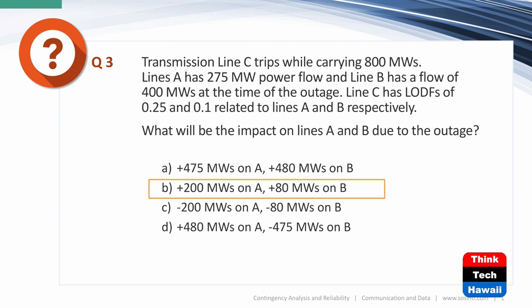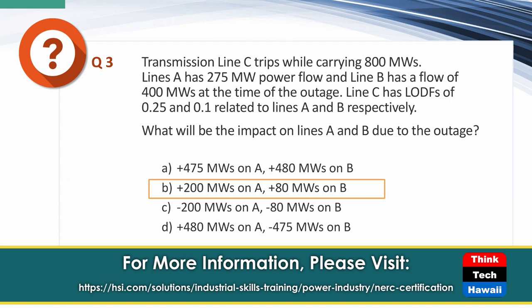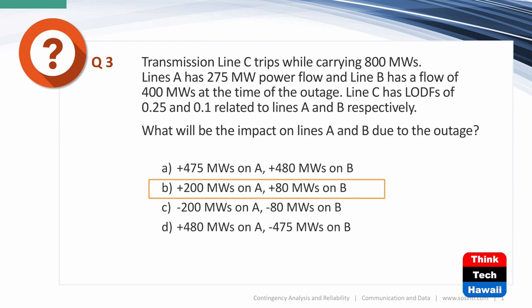Let's start on the first set of slides. Here's an example: Transmission line C trips while carrying 800 megawatts. Line A has 275 MW of power flow, line B has a flow of 400 MW at the time of the outage. Line C has a Line Outage Distribution Factor of 0.25 for line A and 0.1 for line B. The answer is 200 MW on A and 80 MW on B — simply multiply 800 by 0.25 to get 200, and 800 by 0.1 to get 80.